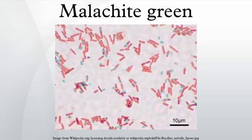Malachite green is active against the protozoan Saprolegnia, which infects fish eggs in commercial aquaculture. It is used to treat parasites and is used as an antibacterial. It is a very popular treatment against Ichthyophthirius multifiliis in freshwater aquaria. The principal metabolite, LMG, is found in fish treated with malachite green, and this finding is the basis of controversy and government regulation.